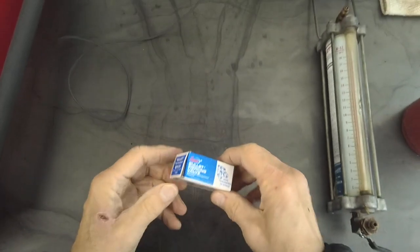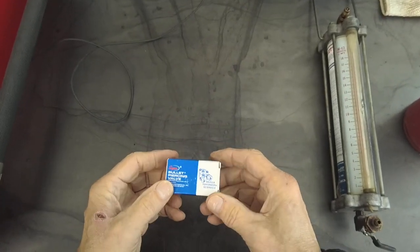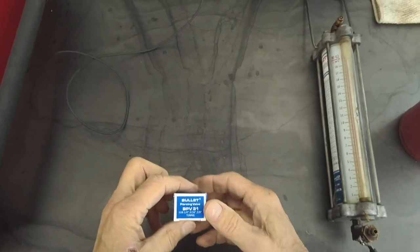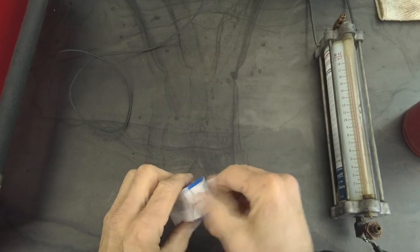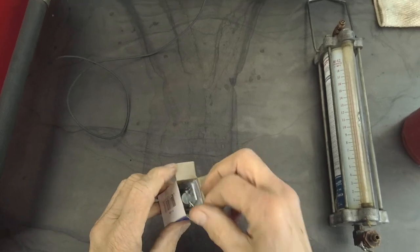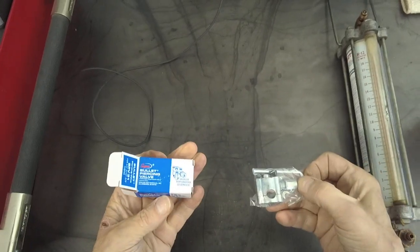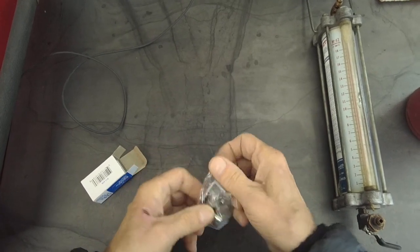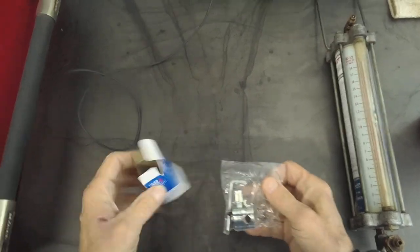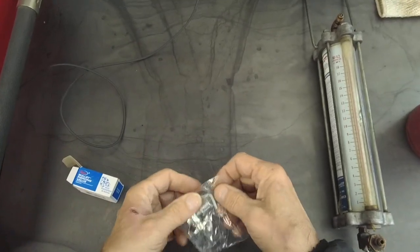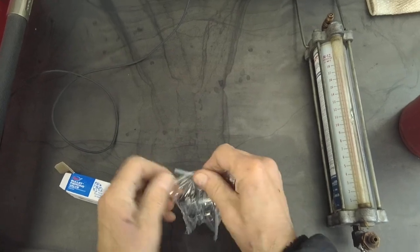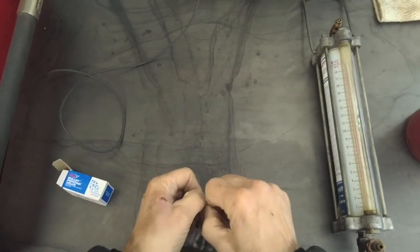These are the line tap valves that I use. There are other brands out there, but I like these the best. I've been using these over 50 years. They're made by Subco and it comes, this is a three in one, so you can use this on quarter inch, five sixteenths inch, and three eighths line.